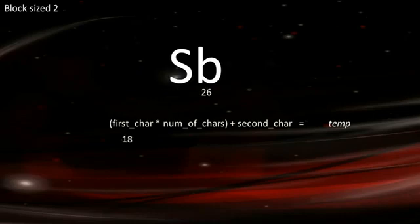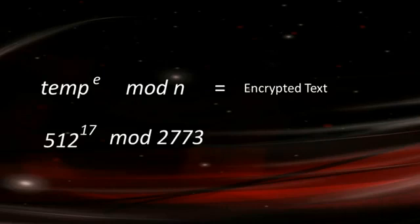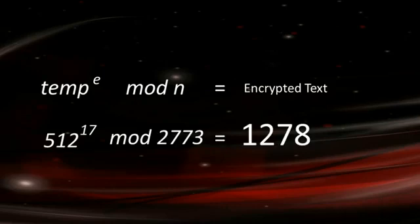Now match each character up to the relative number and use the following equation to encrypt. So we substitute the numbers in S as the first character of the pair and little b as the second letter. Work it out and we get a temporary number we call temp. Using the temp we just got, put it to the power of E and mod it by N and we finally get our encrypted text. So 512 to the power of 17 mod it by the public key, we get 1278.